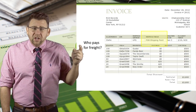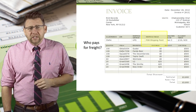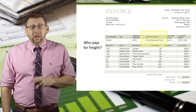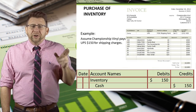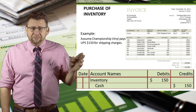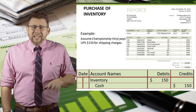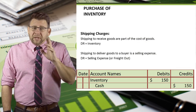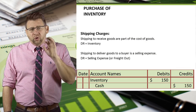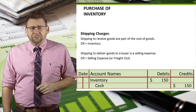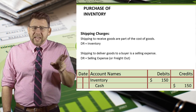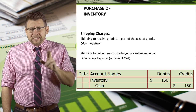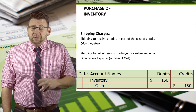In our case, the terms are FOB shipping point, so who pays the freight? That's right, it's Championship Vinyl, the buyer. The journal entry to record the payment of $150 of freight charges is a debit to inventory and a credit to cash. Students are sometimes confused as to why inventory is increasing when we pay for freight. In this case, the quantity of records isn't increasing, but the cost of the records is increasing because of the shipping costs.